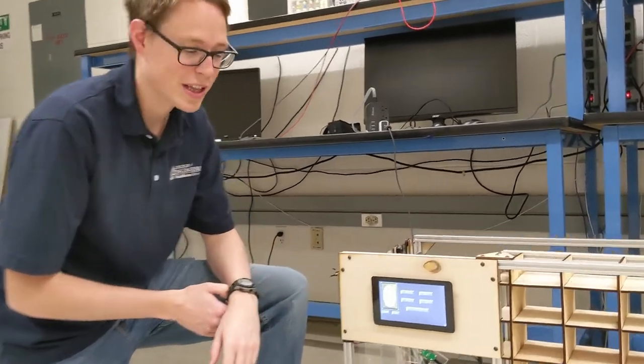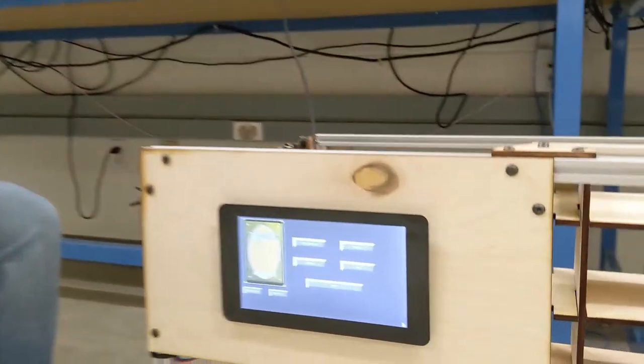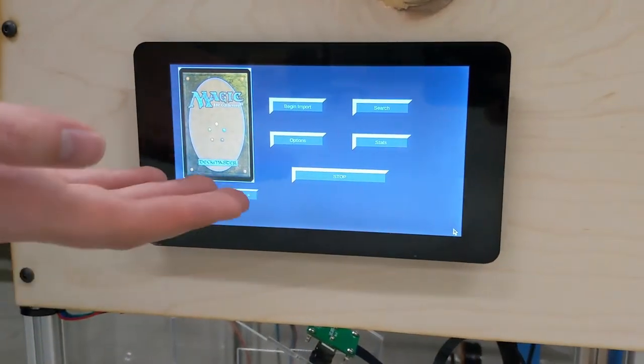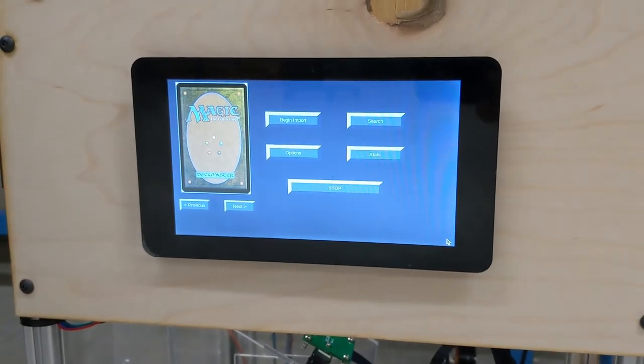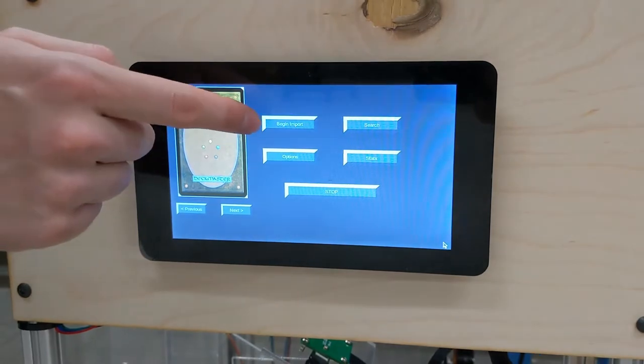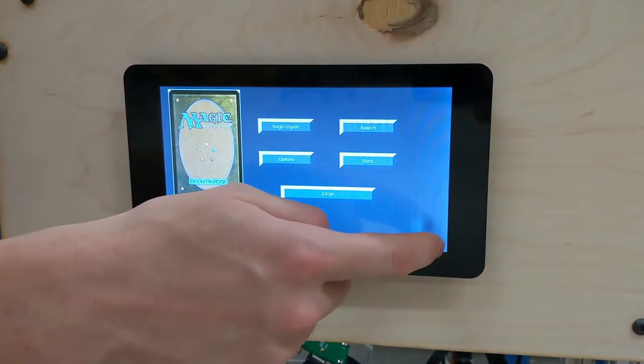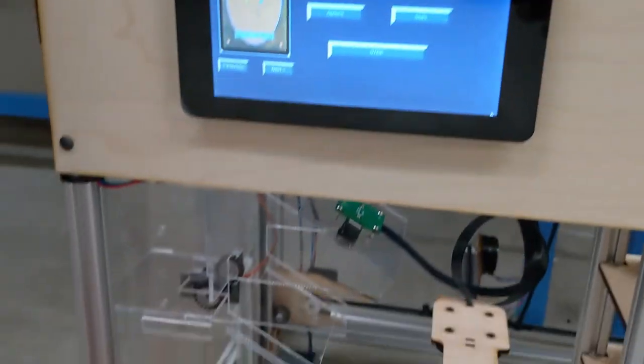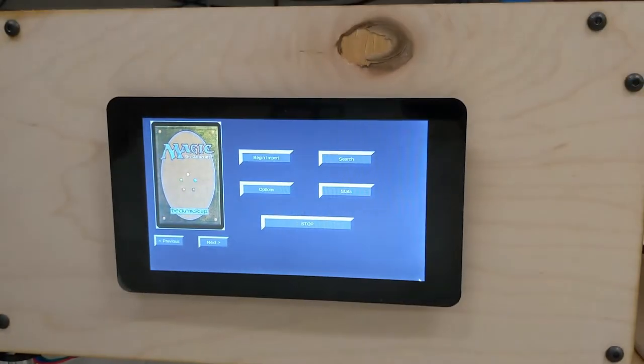Now I will explain our graphical user interface, or GUI, that we have developed for our project. This GUI is a collection of different buttons that will allow us to control and see the state of our project. The first button is our begin import button. When we click that, it signals to our hopper mechanism to begin importing our cards.